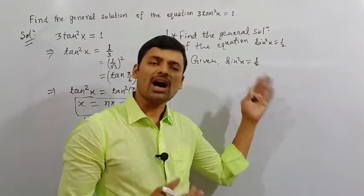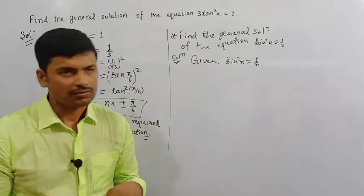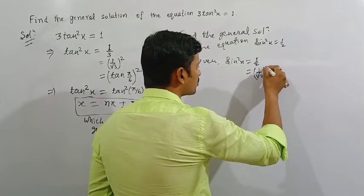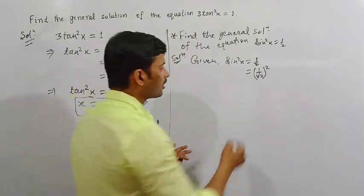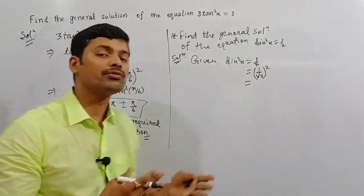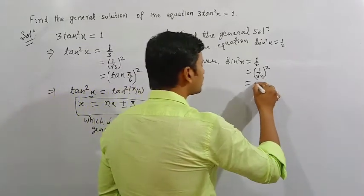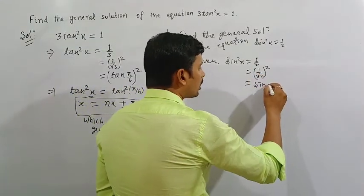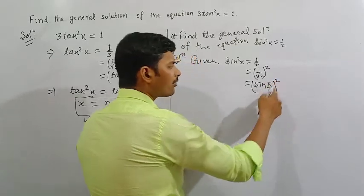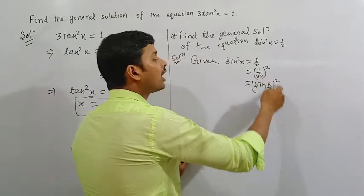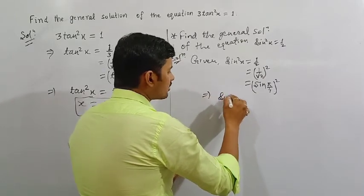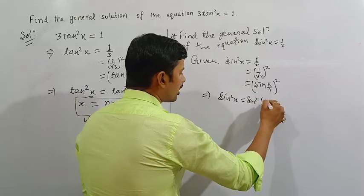1 by 2 can be written as the full square of 1 by root 2. Now, 1 by root 2 stands for sin 45 degrees, that is sin pi by 4 radian. So we can write the square of 1 by root 2 as sin pi by 4, whole squared, because the value of sin pi by 4 is 1 by root 2. This can be written as sin squared x is equal to sin squared pi by 4.